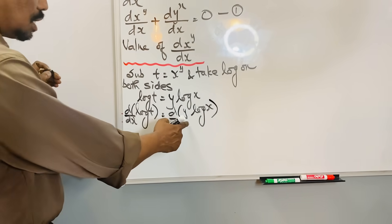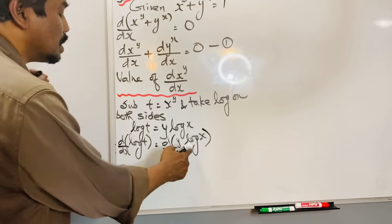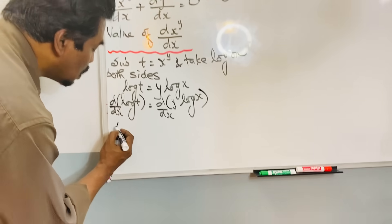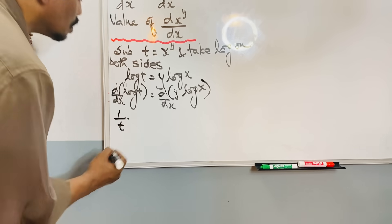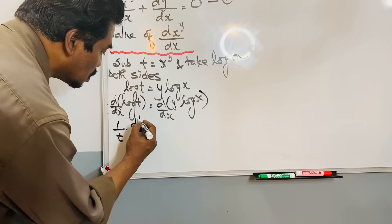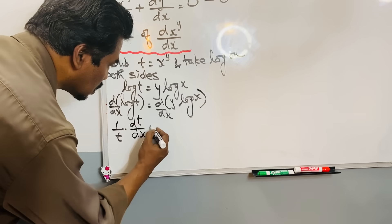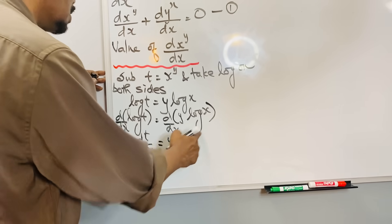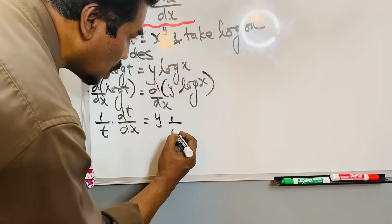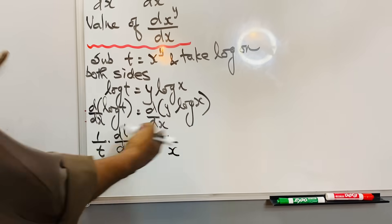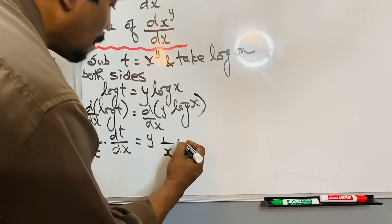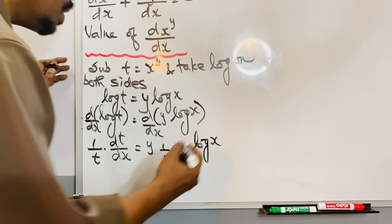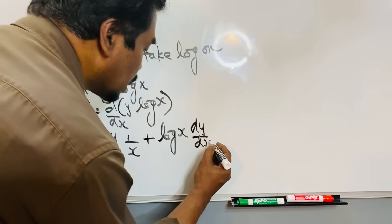Applying the product rule: 1 over t times dt over dx will be equal to y times 1 over x — differentiating log x — where dx by dx is 1, plus log x times dy by dx — differentiating y.